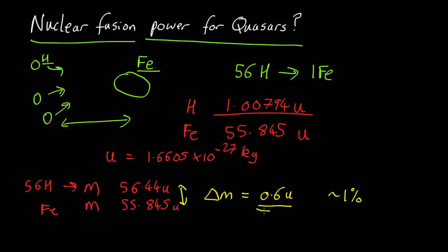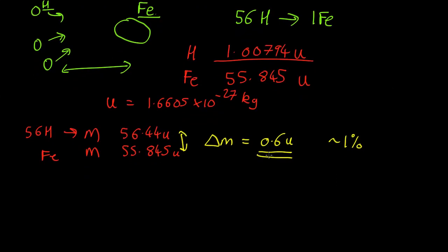So where's this extra mass gone? Well, that's been converted into energy, according to the well-known equation E equals mc squared. So the energy released is equal to the mass lost times the speed of light, c squared.